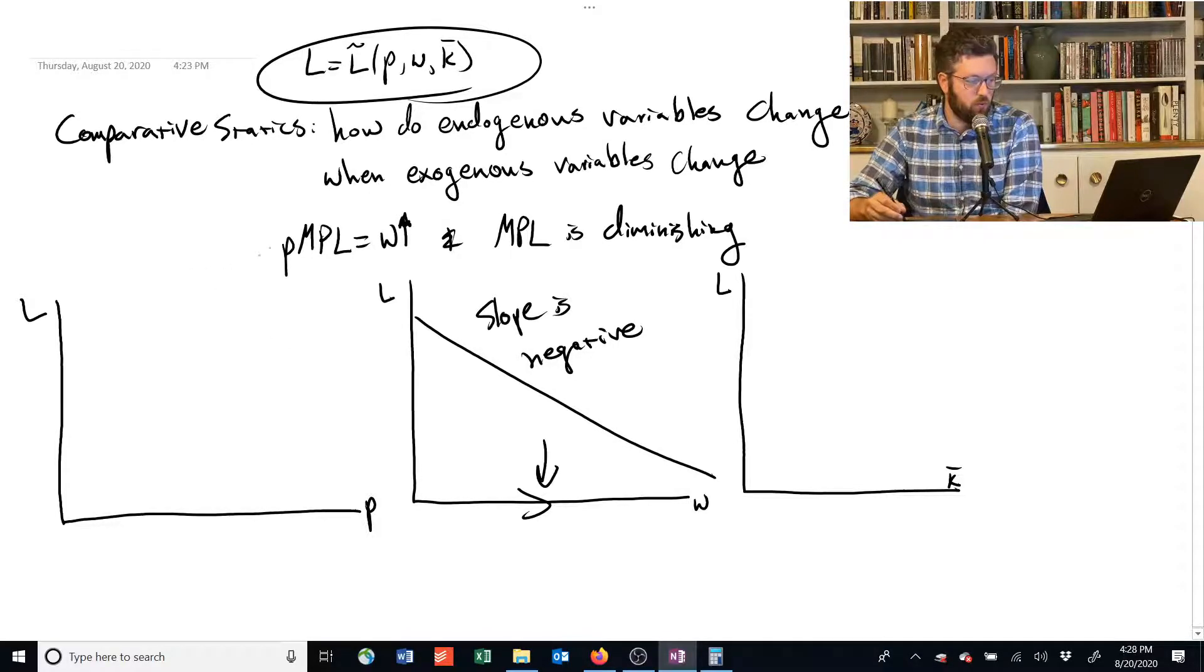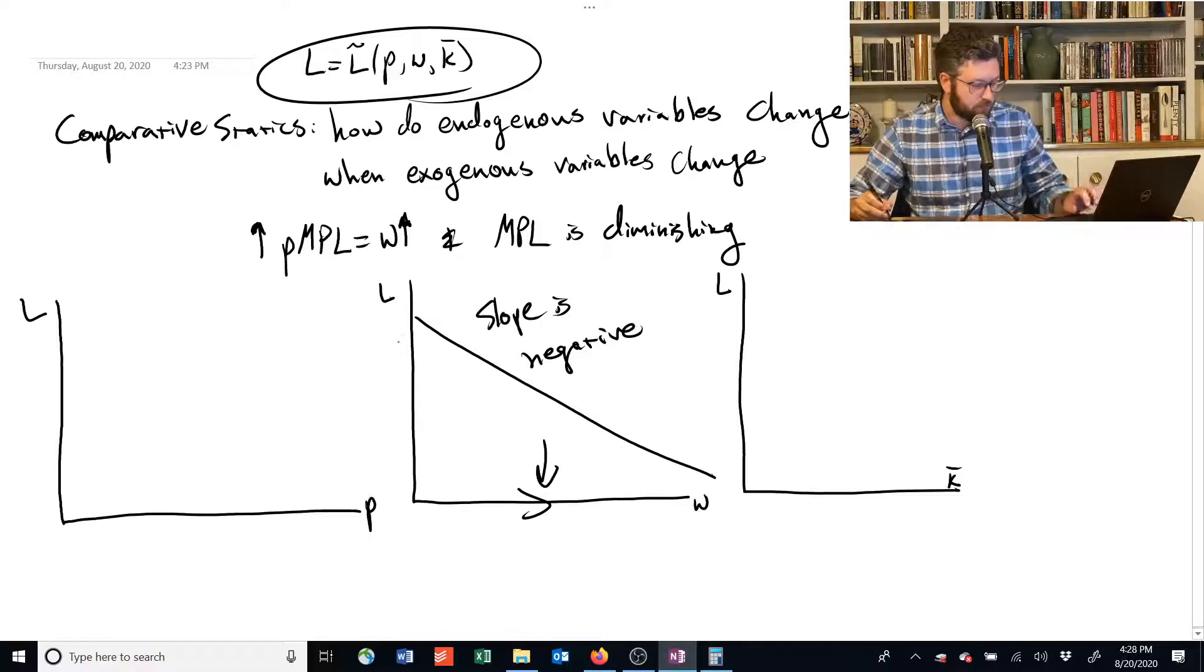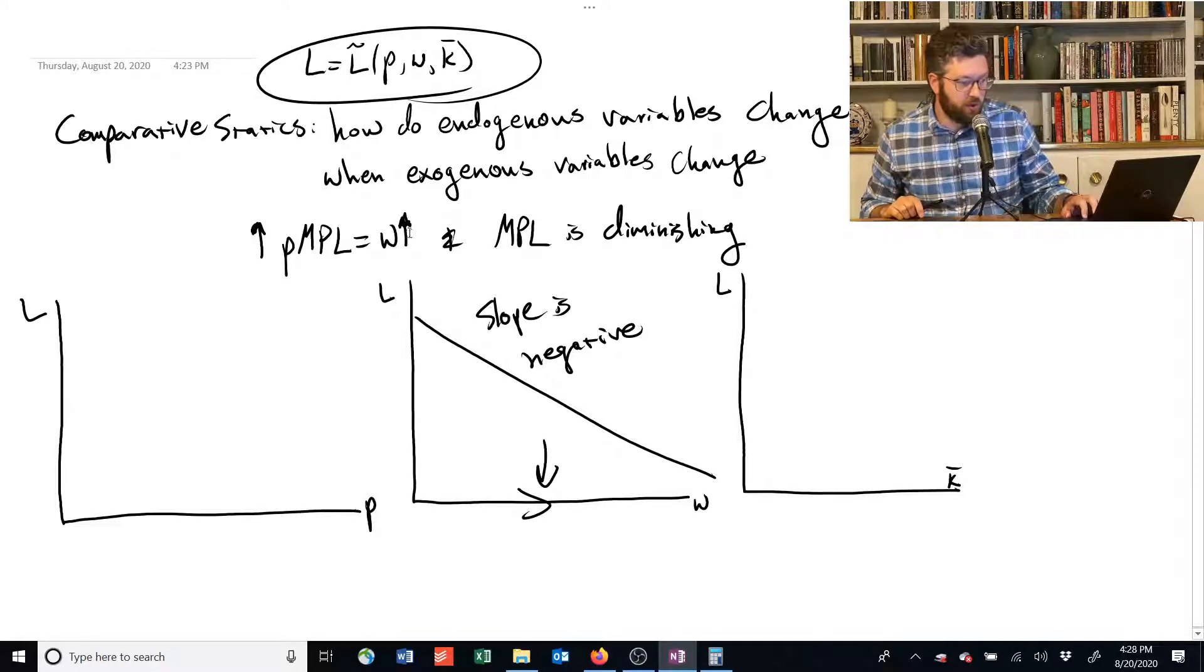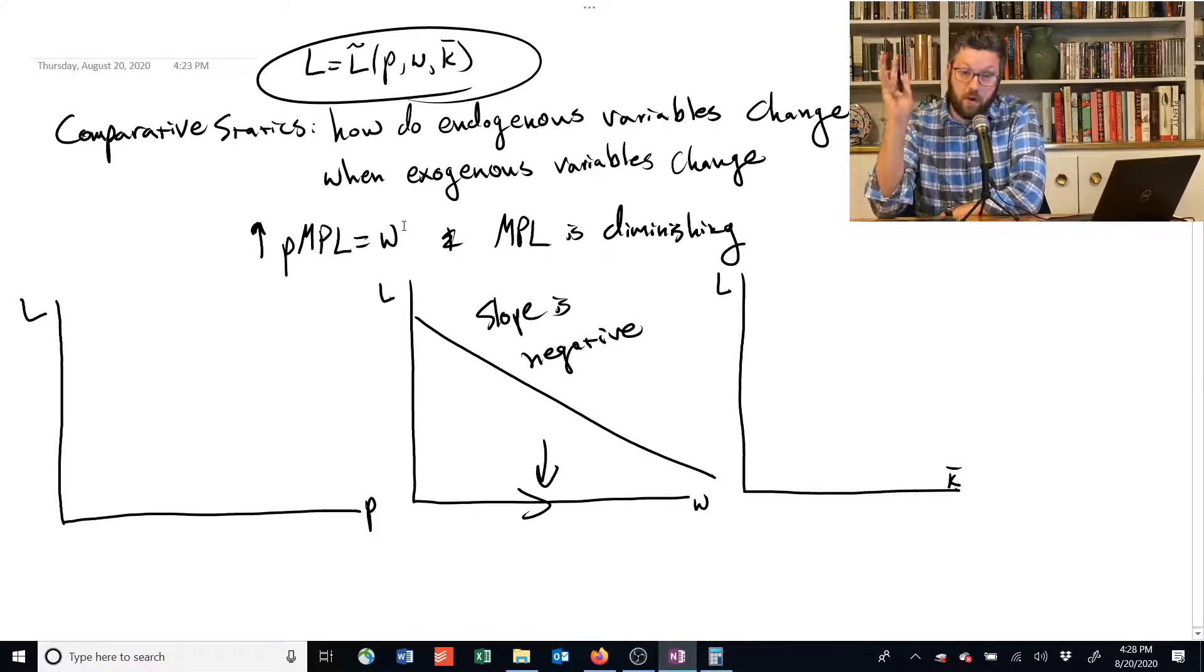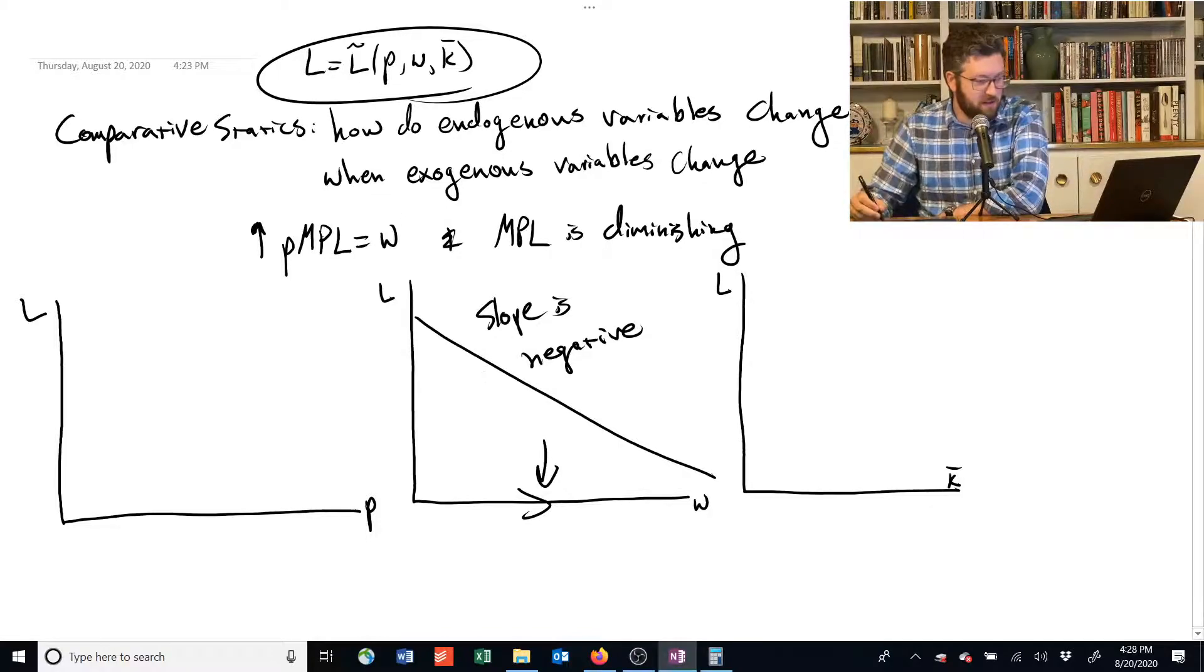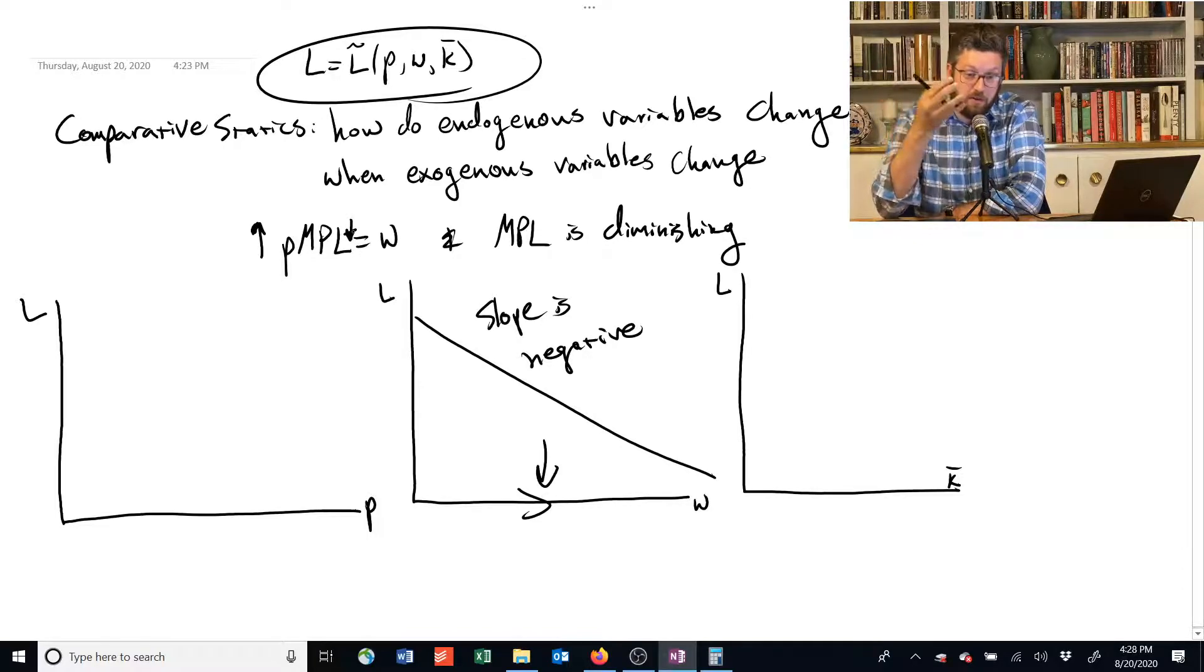Next one. What happens if you raise the price? If you raise the price, and you only raise the price, let's delete this here. If you raise the price, but the wage rate is fixed, that means that we need the marginal product of labor to go down to offset the increase in the price. Otherwise,